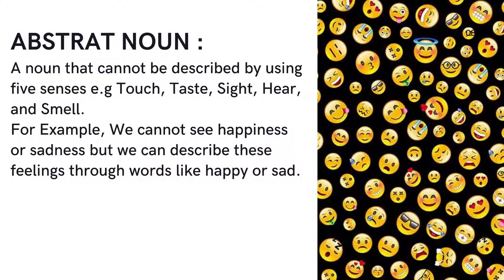Abstract noun: a noun that cannot be described by using the five senses — for example, touch, taste, sight, hear, and smell. For example, we cannot see happiness or sadness, but we can describe these feelings through words like happy or sad.